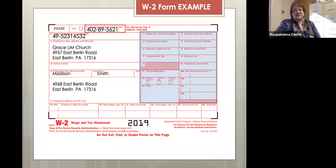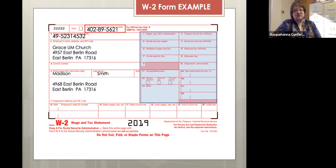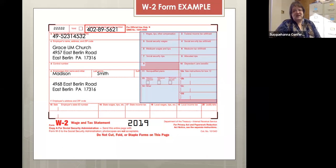This is a W-2 form, shown here with my example for Pastor Madison Smith. Filled in already is the pastor's Social Security number, name and address, and also the church's EIN and name and address. I had a client last year who works for a charge and serves three churches — each church issued her a W-2 and applied things differently. If your church is a charge situation, it would really be best for your pastor if the W-2 could be centralized, not issued separately from each church, as that led to so much confusion.